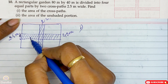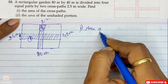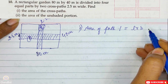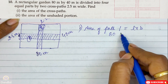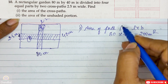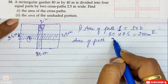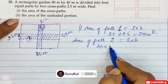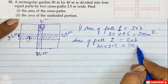So this is path 1 and this is path 2. Let us find the area. Area of path 1 = length × breadth. Path 1's length is 80 and its breadth is 2.5, which gives 200 meter square. Path 2 is again length × breadth. Its length is 40 and breadth is 2.5, which gives 100 meter square.